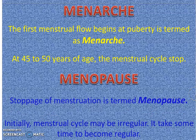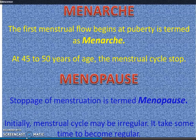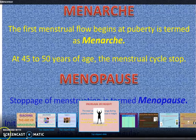Initially जब menstrual cycle शुरू होती है — 10 या 11 साल में — उस time पर यह regular नहीं होती। One month में हुई, फिर three months बाद हुई, फिर six months बाद — इस तरह irregular होती है। लेकिन उसके बाद धीरे धीरे regular होने लगती है, यानी every 28 to 30 days पर four to five days का menstrual period होता है। तो बच्चो, आज इतना complete करेंगे और आगे का portion हम कल पढ़ेंगे। Thank you बच्चो।